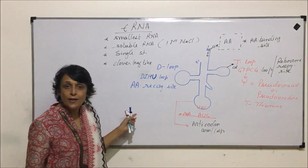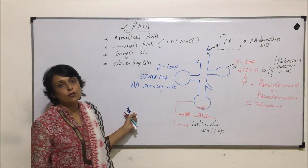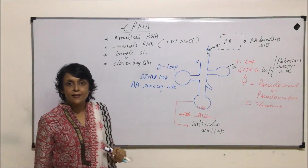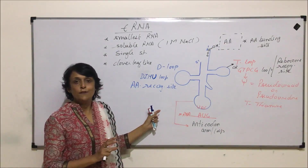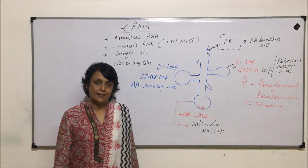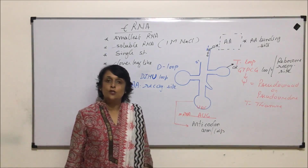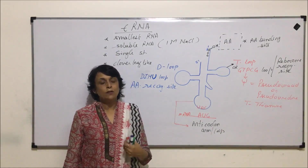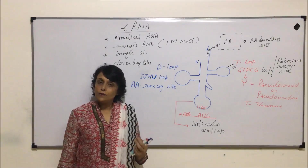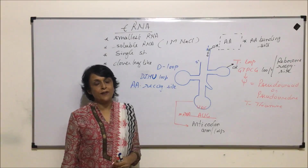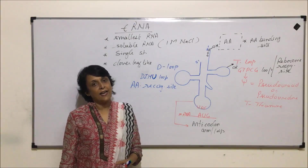So this is the structure of tRNA. It is the smallest RNA, also known as soluble RNA. Its shape is clover leaf-like, but it is a single-stranded structure. In the next video we will talk about the third type of RNA, that is rRNA.